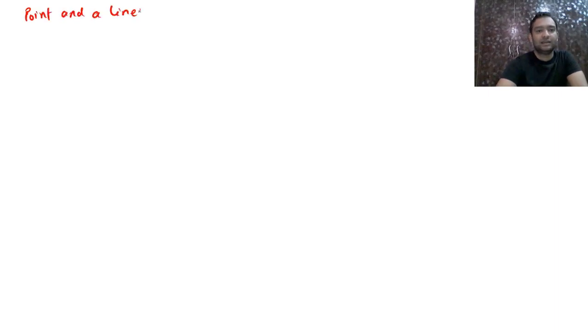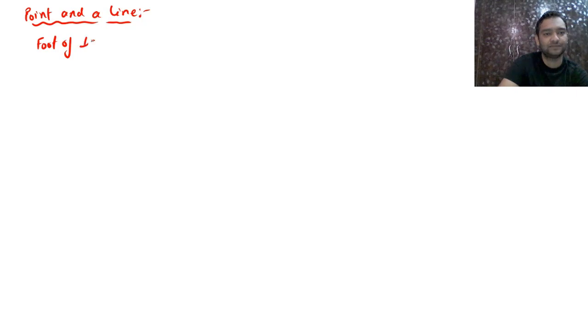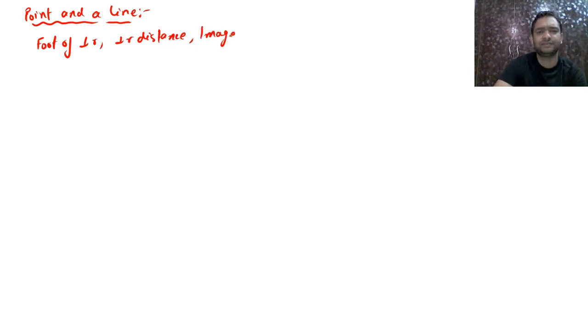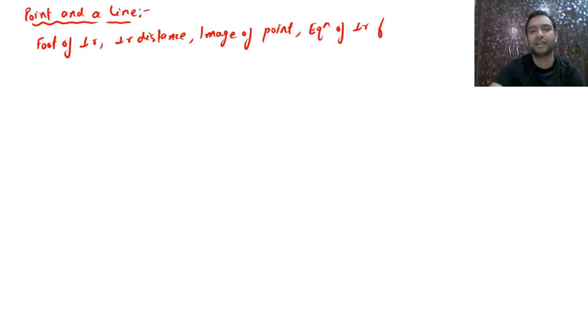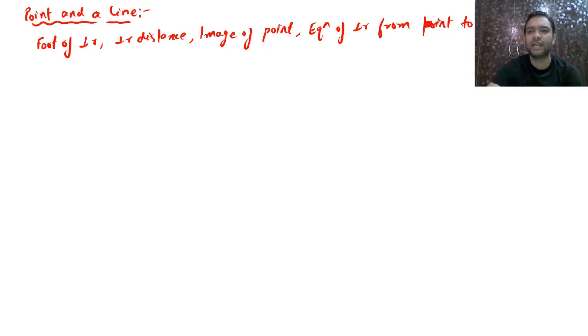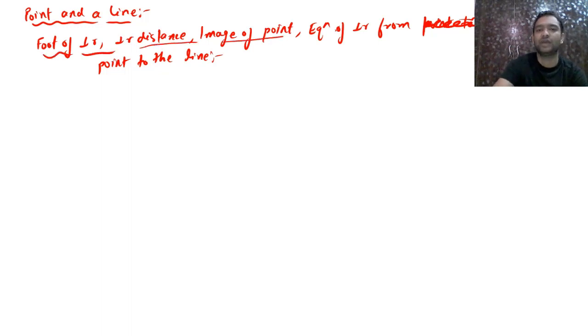The next topic is point and a line. For a point and a line, typically four things are asked: foot of perpendicular, perpendicular distance, image of the point, and equation of the perpendicular from the point to the line. I will cover all four using a single example.